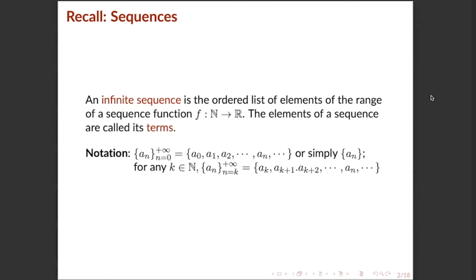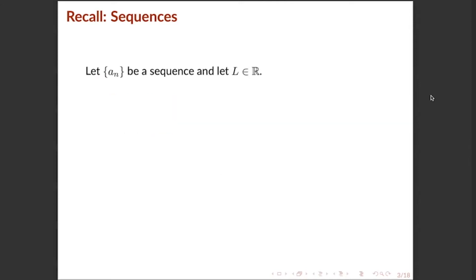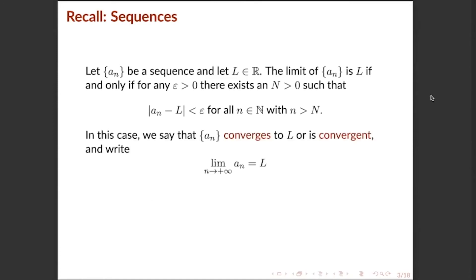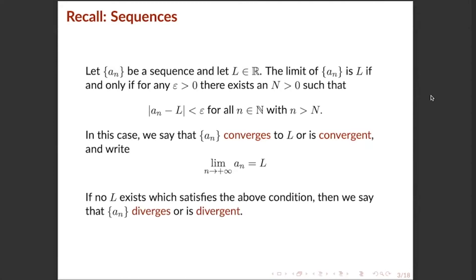Now that we know sequences, we can get the limit of a sequence. Let {a_n} be a sequence and let L be a real number. The limit of a sequence a_n is L if and only if for any ε > 0, there exists an N > 0 such that the inequality is satisfied. In this case, we say that a_n converges to L, or is convergent, and write lim(n→+∞) a_n = L. If no real number satisfies this condition, then a_n diverges, or is said to be divergent.